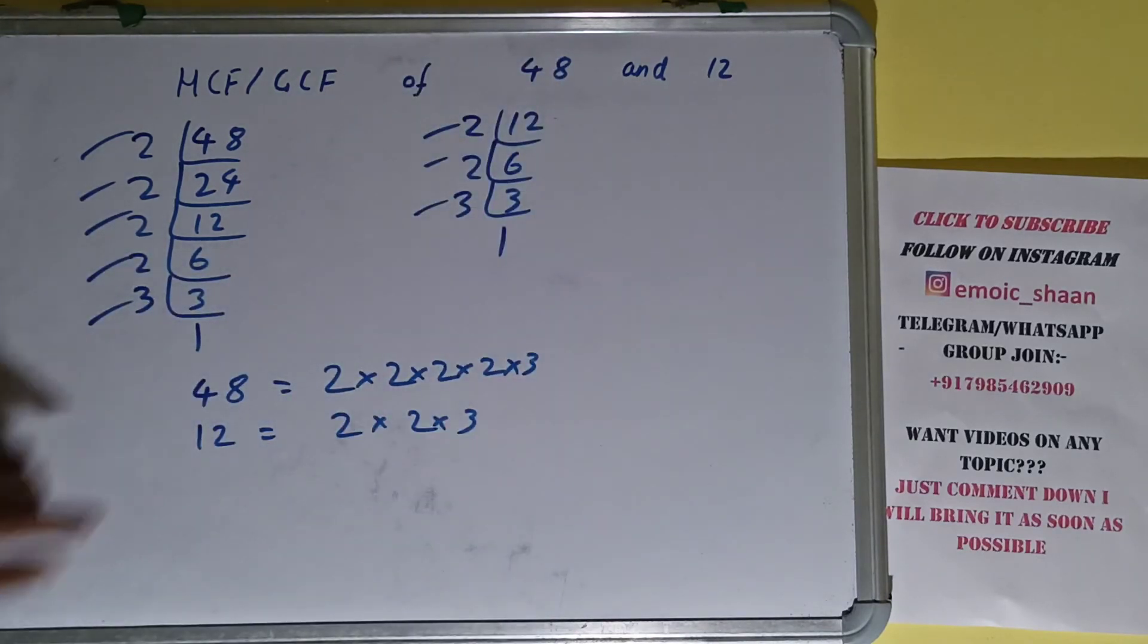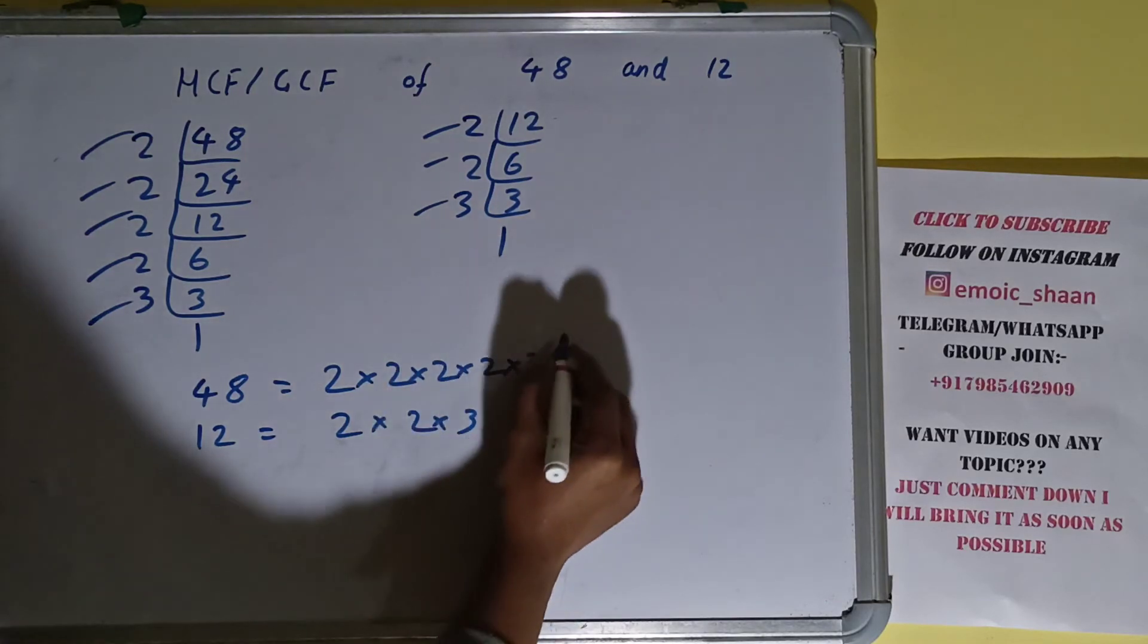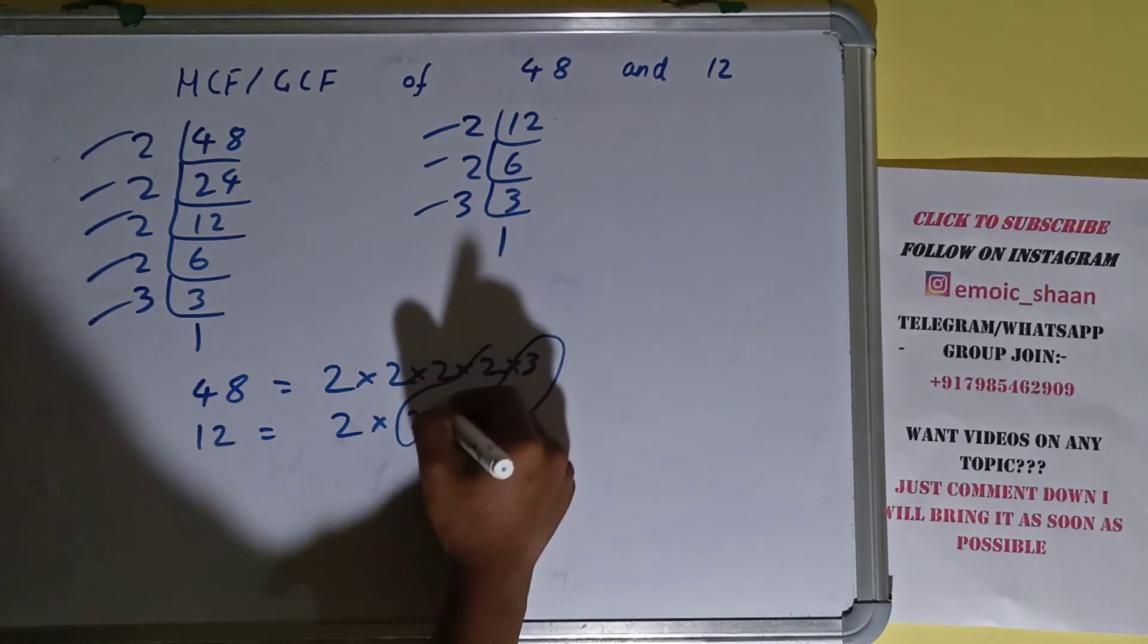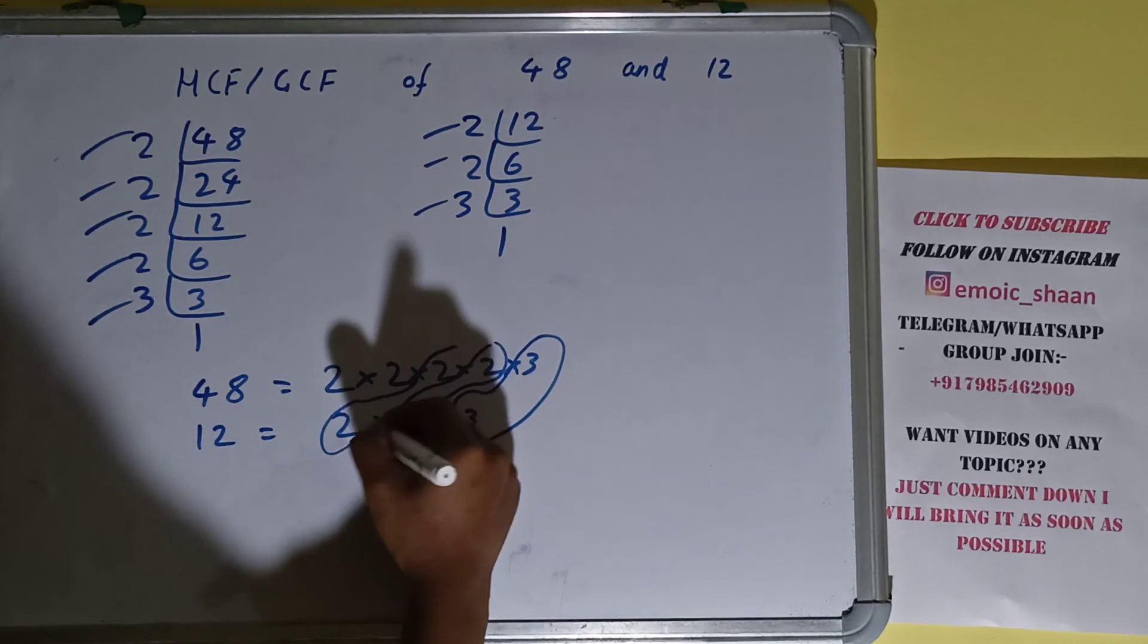2, 2, 3. The next thing we need to do is circle out the common prime factors. So we have this 3 in common, we have this 2 in common, we have this 2 in common. Do we have anything extra in common? No.